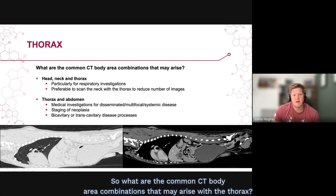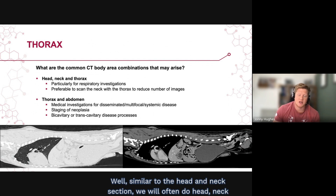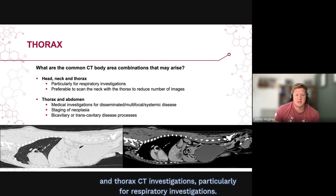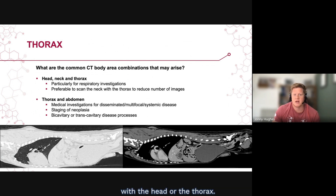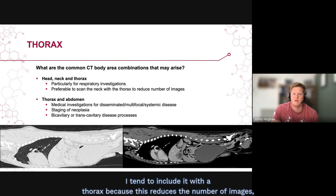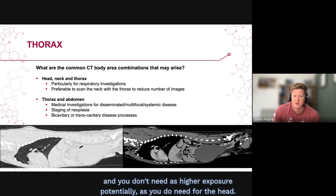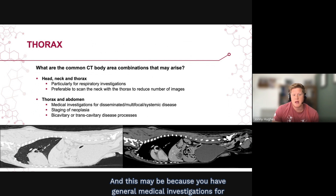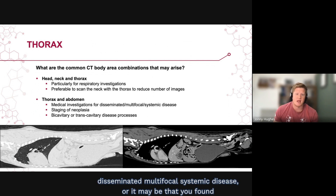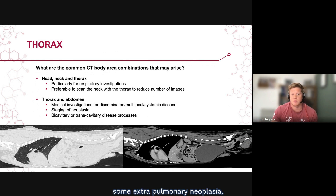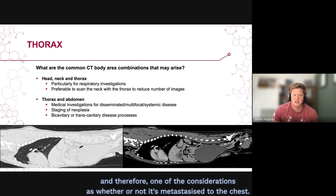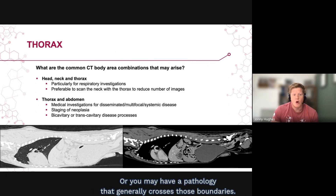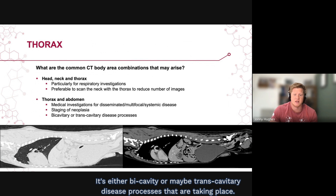Common CT body area combinations with the thorax include head, neck, and thorax investigations, particularly for respiratory investigations. You will need to decide whether to include the neck with the head or with the thorax — including it with the thorax reduces the number of images and doesn't require as high an exposure as needed for the head. Thorax and abdomen investigations are also common, either for general medical investigations of disseminated multifocal systemic disease, staging of extra-pulmonary neoplasia for metastasis to the chest, or for pathology that crosses cavitary boundaries with transcavitary disease processes.